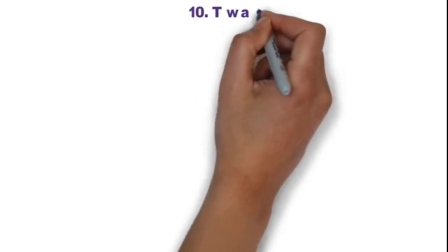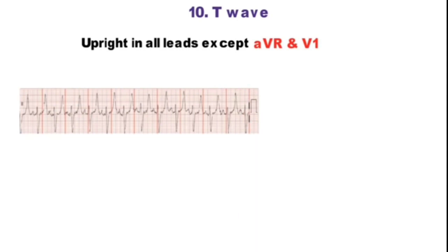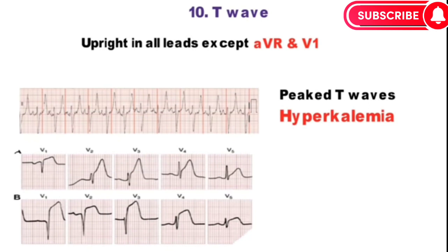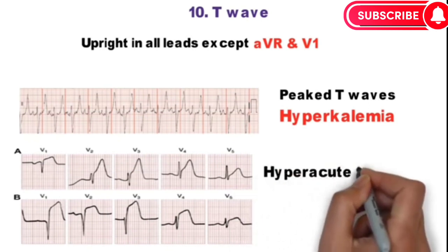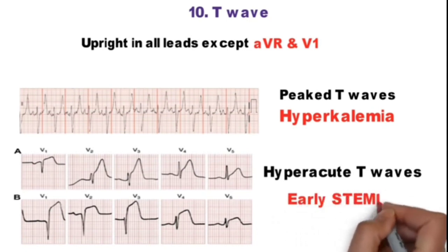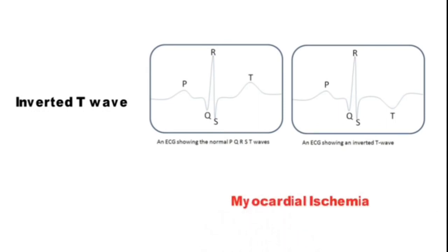Now the last step is T wave. It is upright in all leads except AVR and V1. Tall, narrow, and symmetrically peaked T waves are commonly seen in hyperkalemia. Broad, asymmetrically peaked or hyperacute T waves are seen in early stages of ST elevation MI. Inverted T waves are seen in myocardial ischemia and ventricular hypertrophy.